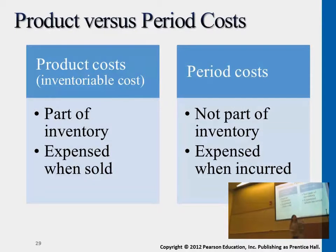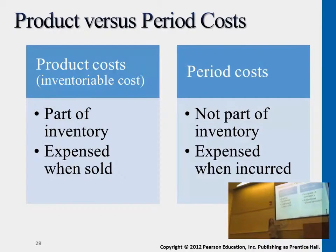In the multi-segmental income statement, the first section is always inventory cost, which is the largest cost of doing business, and it relates to inventory. And then the remaining supporting costs are operating expenses.